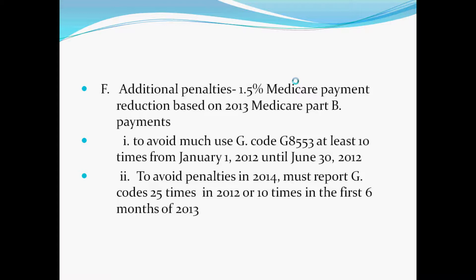In order to avoid penalties for e-prescriptions, there is a 1.5% Medicare payment reduction based on 2013 Medicare Part B payments that you can avoid by using G-code G8553 at least 10 times between January of this year and June 30th. In 2014, to avoid the same penalty, you have to use the same code 25 times that year, or 10 times in the first six months of 2013.